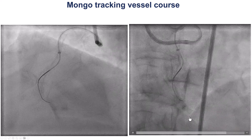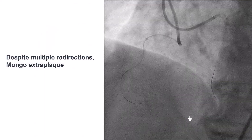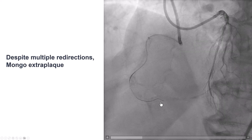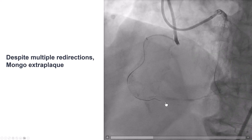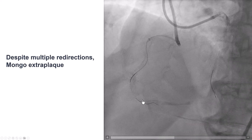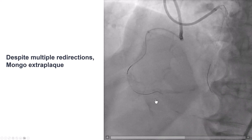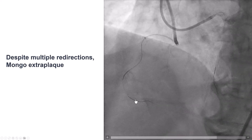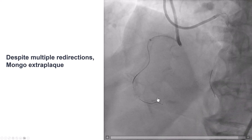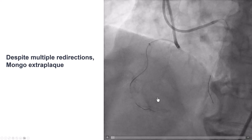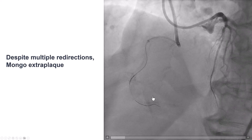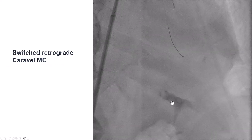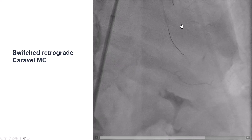But then we had difficulty going further down, and eventually the wire went subintimal. With contralateral injection, we now see that we are in the extraplaque position. Because of the calcium, we thought that reentry would have been quite challenging, and that is why we decided to switch to retrograde.